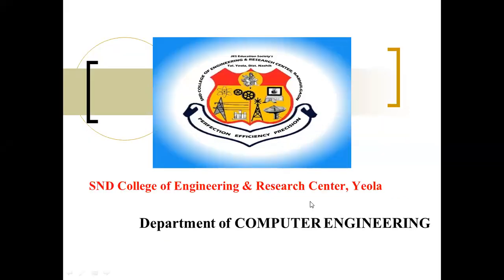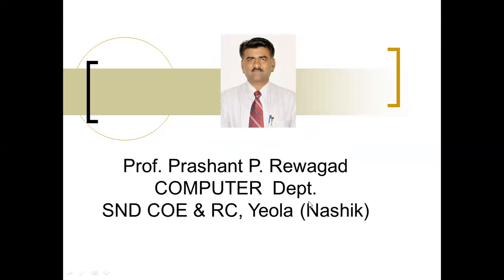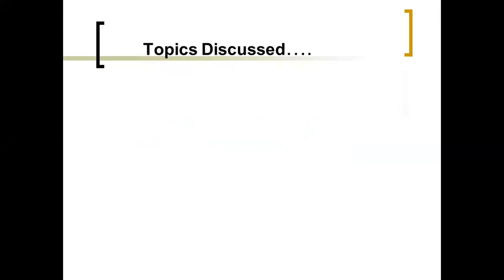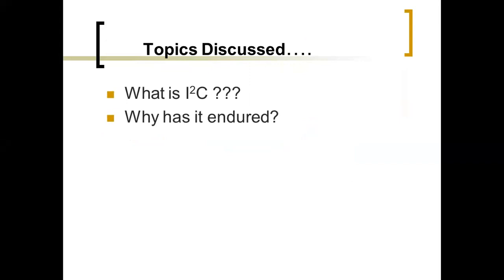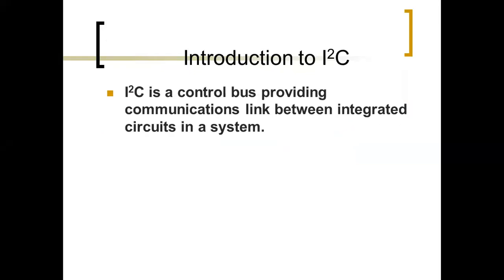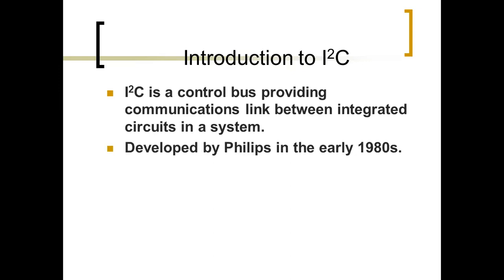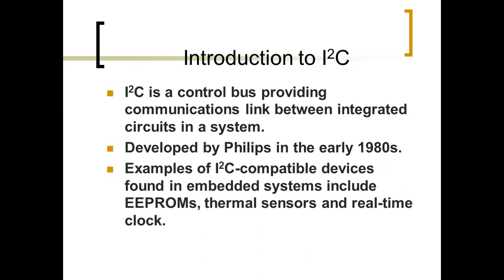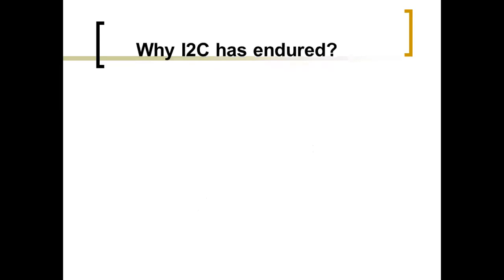Today we are discussing the topic I²C from the subject microprocessor, Unit 6. I²C is a control bus providing a communication link between integrated circuits in a system, developed by Philips in the early 1980s. Examples of I²C compatible devices found in embedded systems include EEPROM (electrically erasable programmable read-only memory), thermal sensors, and a real-time clock.